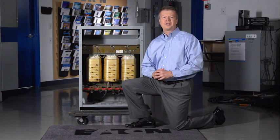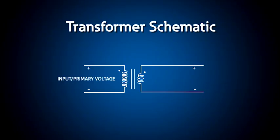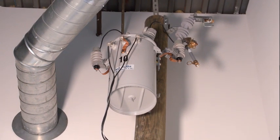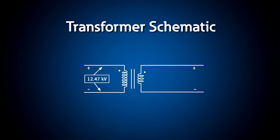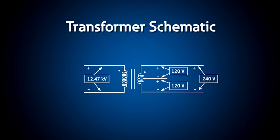How does a transformer work? A transformer is an electrical device whereby an input or primary voltage is transformed to the output or secondary voltage through magnetic coupling. This single phase transformer, much like you might see on a pole in front of your house, transforms the voltage from 12.47 kV to 240 volts with a center tap for 120 volt loads. Transformers are rated in volt amperes, and the voltage and current are inversely related by the number of turns used on the primary and secondary windings.